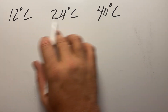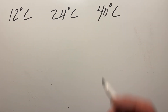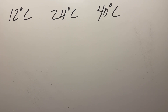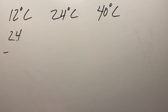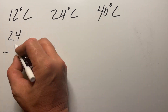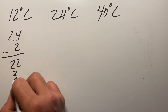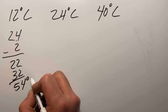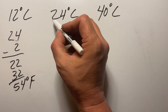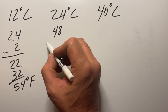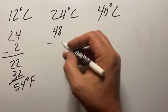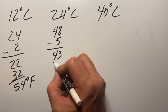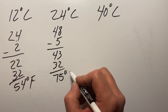Now we have three examples: 12 degrees, 24 degrees, and 40 degrees Celsius. For 12: double to 24, move one decimal place gives 2.4, round down to 2, so 24 minus 2 is 22, add 32 — that's 54 degrees Fahrenheit. For 24: double to 48, move one decimal place gives 4.8, round up to 5, so 48 minus 5 is 43, add 32 — that's 75 degrees Fahrenheit.